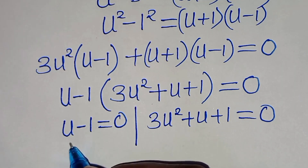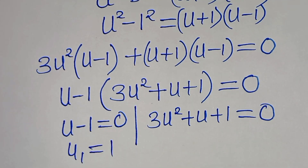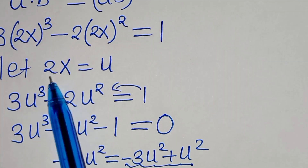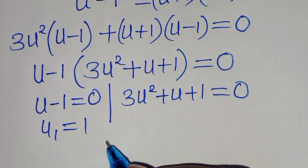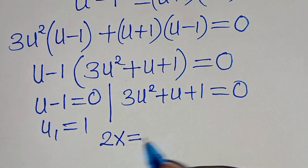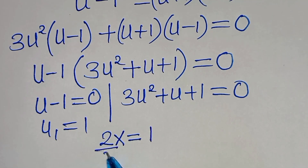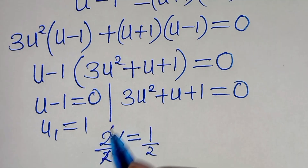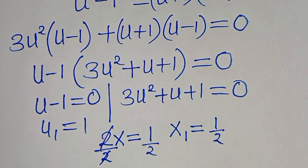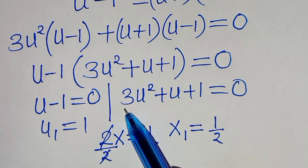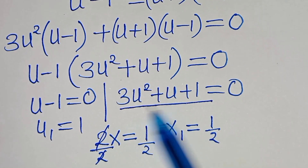So, from the first part here, we have that u₁ is equal to 1. Now, if you recall, we let 2x equal to u, so we can substitute 2x for u. So, that now here we have 2x is equal to 1. So, let's divide both sides by 2, so that now we have x₁ is equal to 1/2. So, we have the first value of x; let's proceed to solve for the other values of u in this equation.